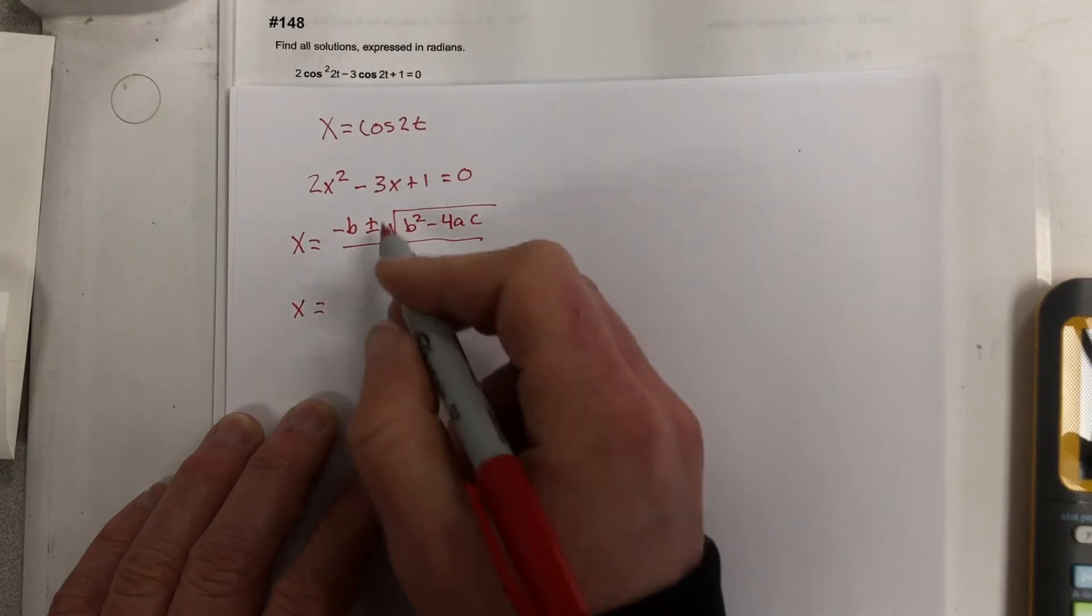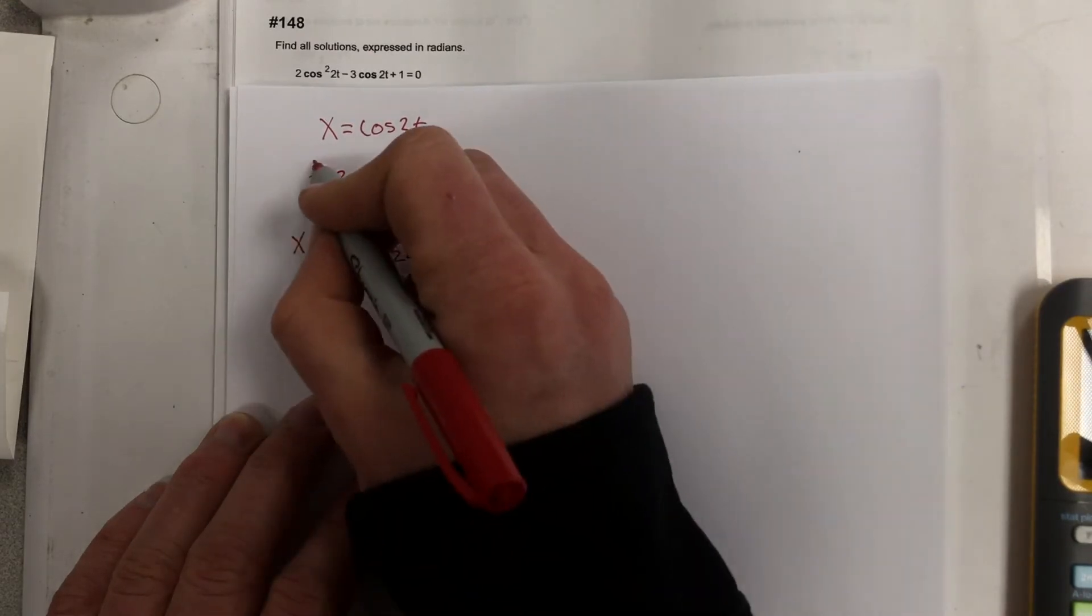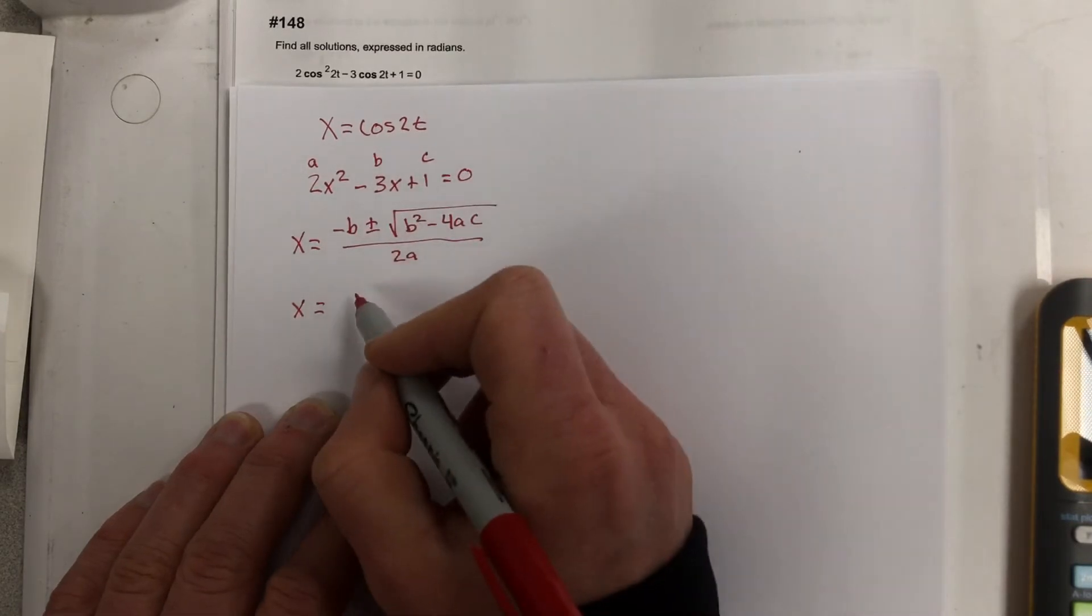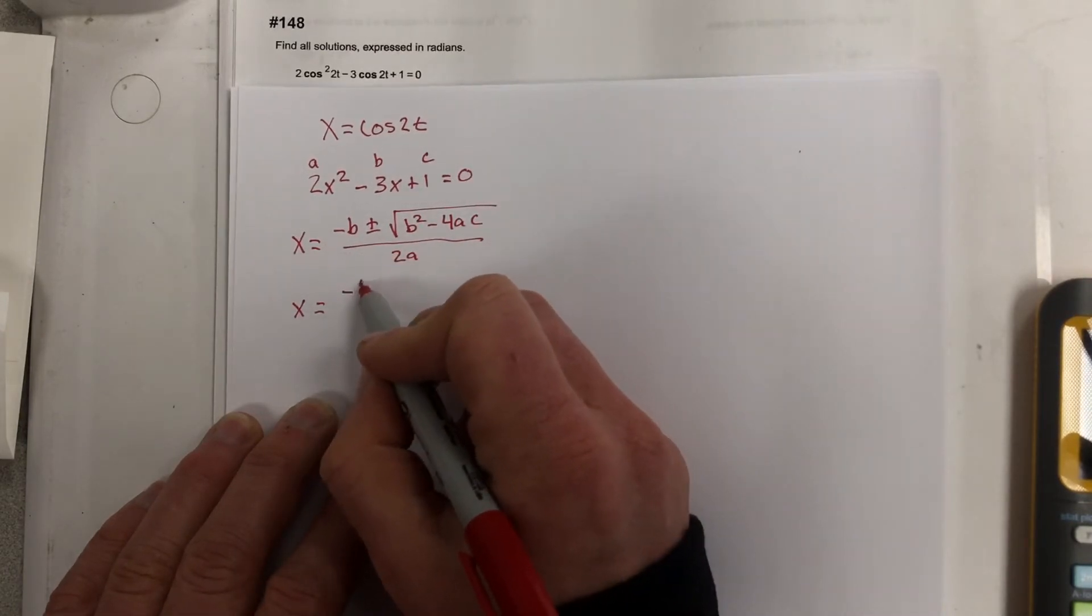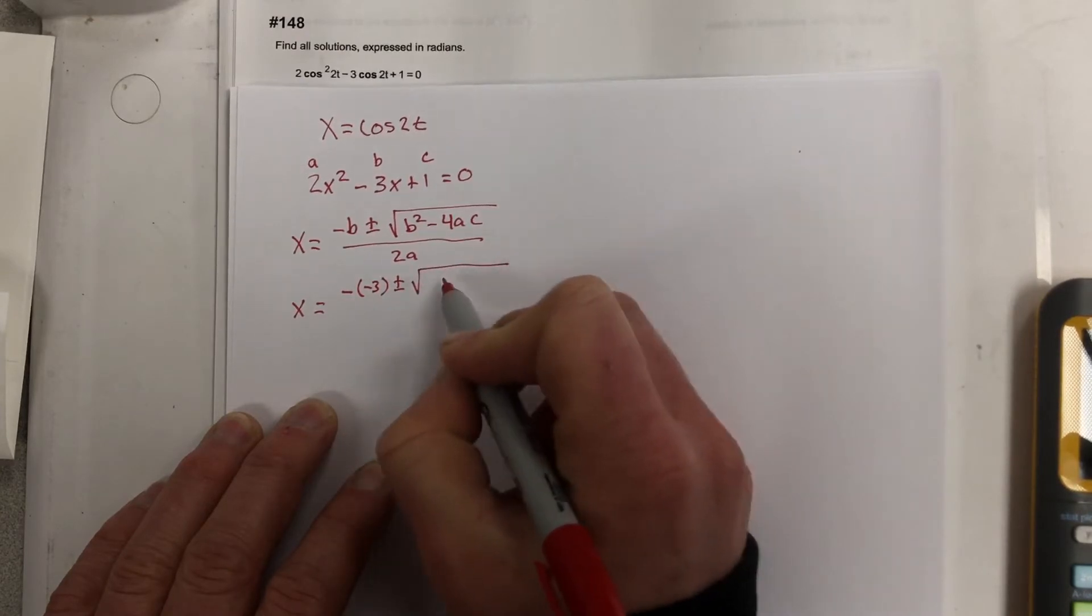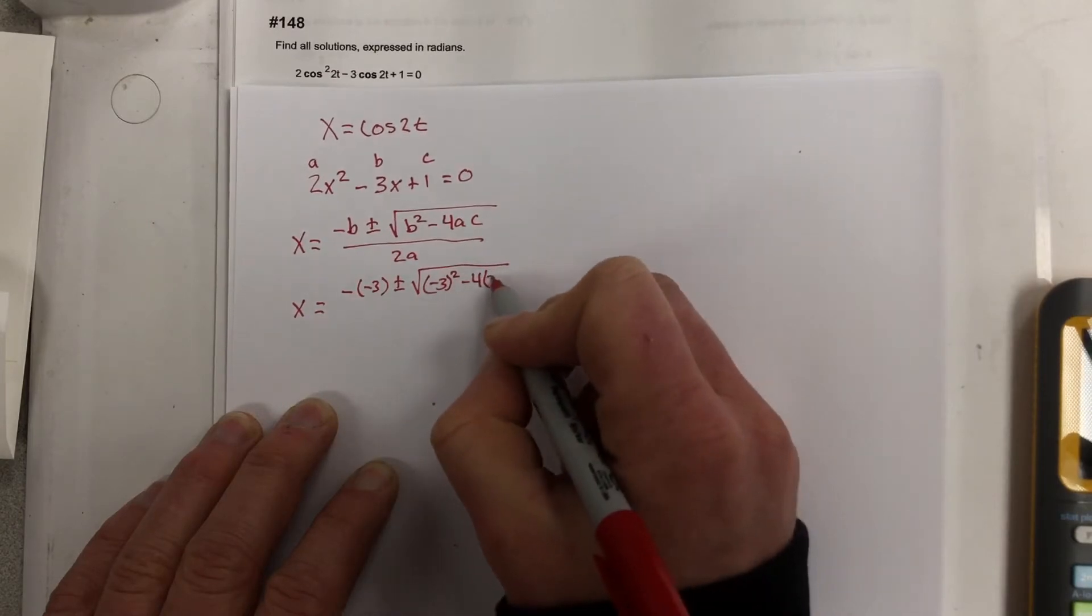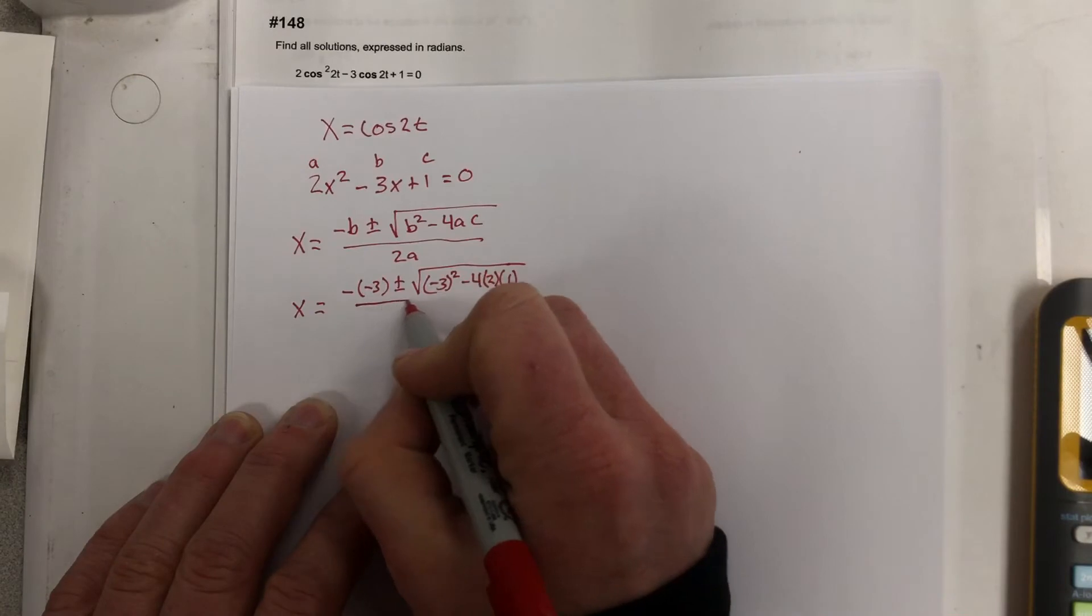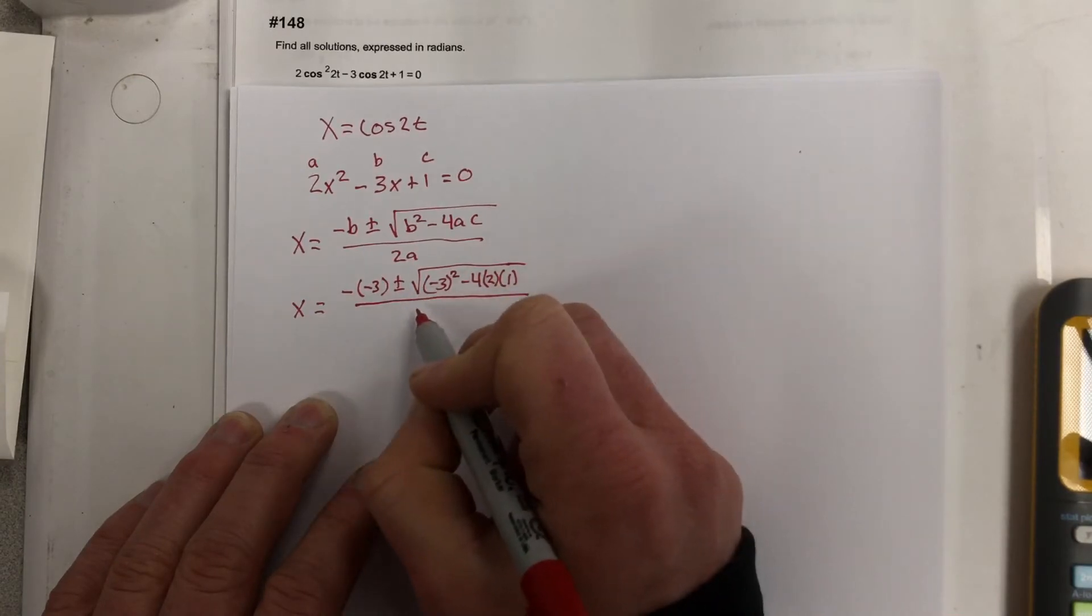Plug that in. I end up with this is a, b, and c. Get negative, negative 3, plus minus root, negative 3 squared, minus 4 times a, which is 2, times c, which is 1, over 2 times 2.